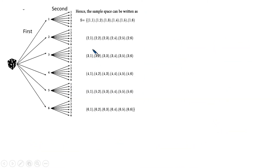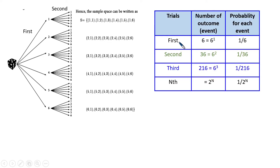Similarly for the rolling of a die: you roll a die, and this is the sample space — these are all the events. For two dice or a single die thrown twice, in the first trial you can get six different events and the probability of getting each is one by six. In the second trial, you have six times six — 36 combinations — so the probability is one by 36. If you did a third trial, you would get six to the power three — 216 — and the probability of each sequence would be one by 216. For the nth trial it is six to the power n, or probability one by six to the power n.